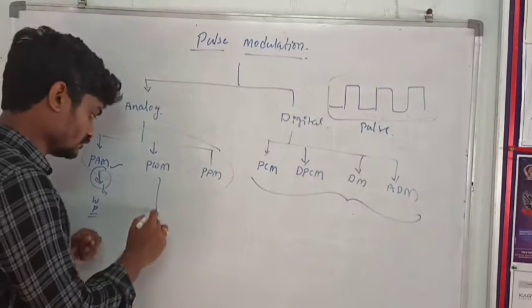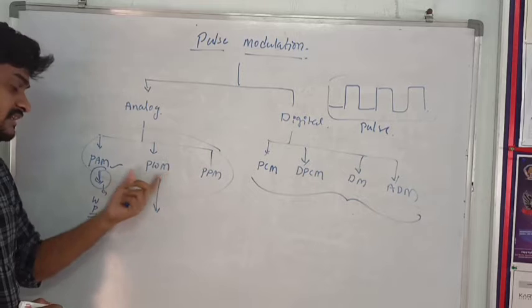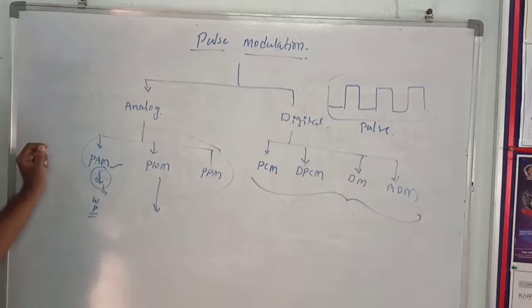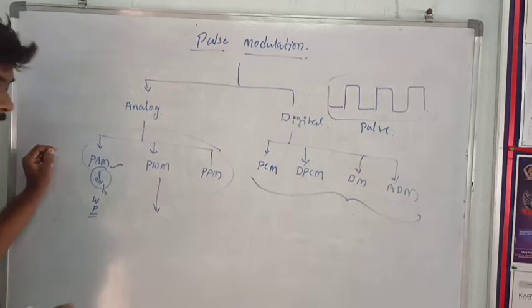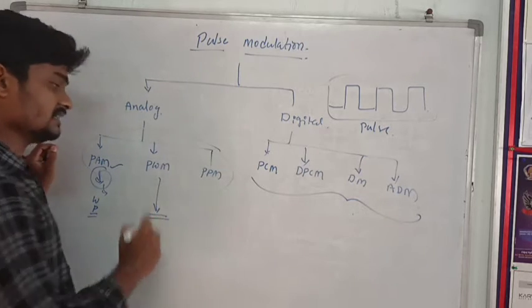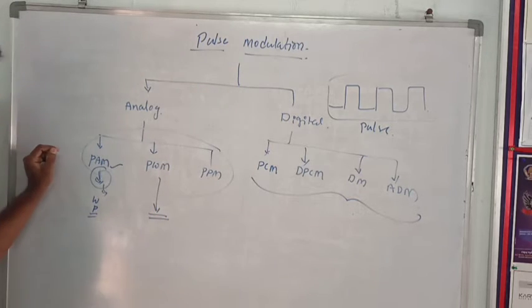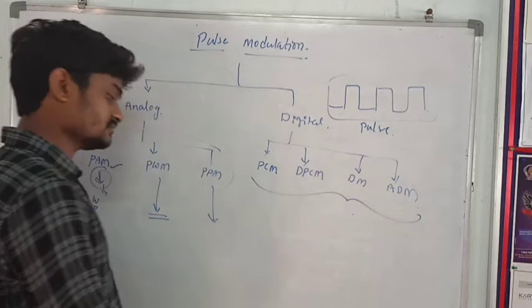In Pulse Width Modulation, the width of the pulse changes with respect to the amplitude of the message signal. This is called Pulse Width Modulation. Next is Pulse Position Modulation.